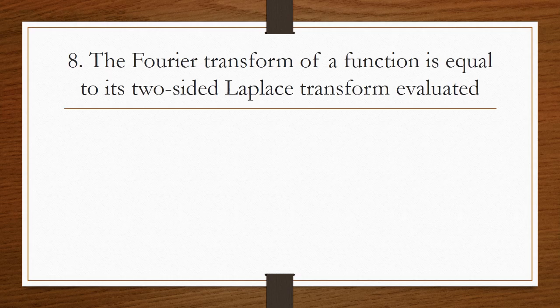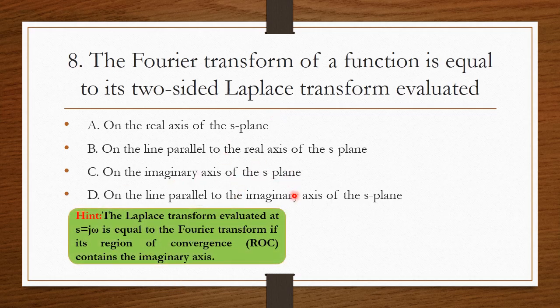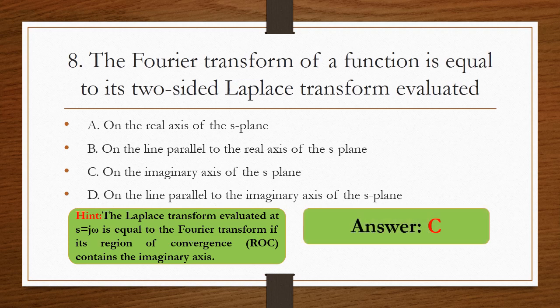The Fourier transform of a function is equal to its two-sided Laplace transform evaluated on the imaginary axis of the S-plane. We know the relation between the Laplace transform and Fourier transform — we substitute S = jω in the Laplace transform to get the Fourier transform, which lies on the imaginary axis of the S-plane. So option C is the right answer.